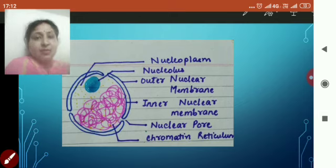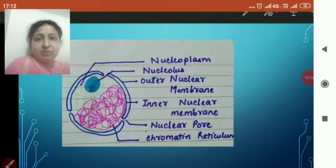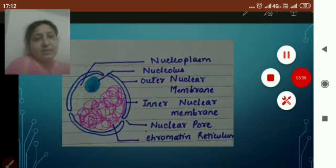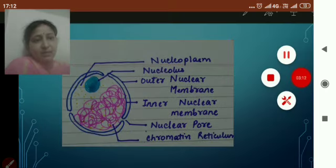Nucleus is the control center of the cell. It controls all the metabolic activities of the cell. Thank you. Now in the next lecture, I will tell you or give you some more information about the other cell organelles present in plant cell as well as in animal cell. Thank you.